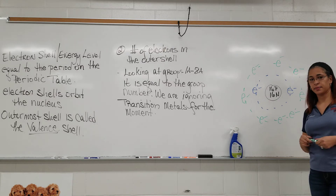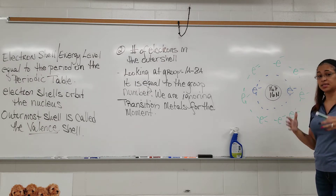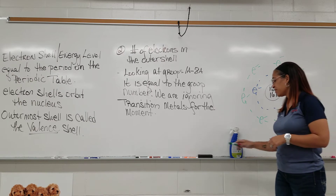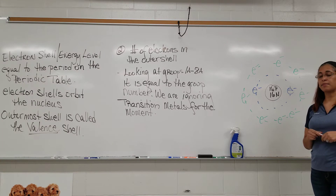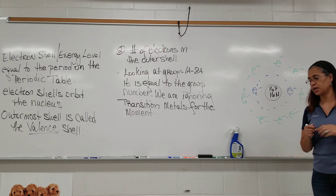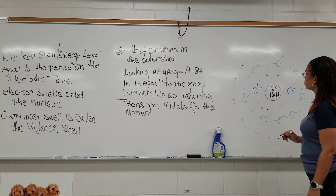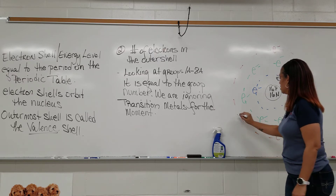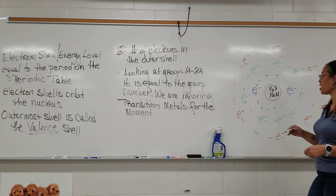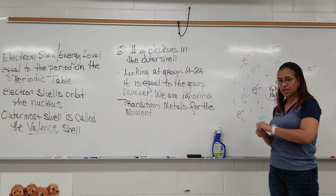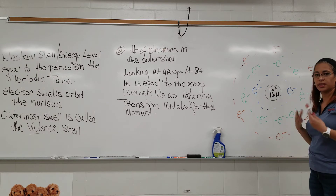Two plus eight is ten. We have 16 protons, so we must have 16 electrons since this is a neutral atom. We've already placed ten electrons, so we have six remaining. Our third shell gets six electrons: one, two, three, four, five, six. I place them going around rather than in a circle because electrons tend to behave in pairs, so I like to place them in pairs with their partner.